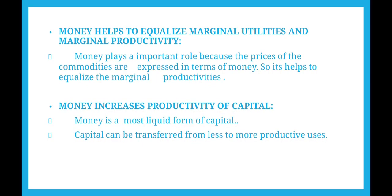The next function is money helps to equalize marginal utility and marginal productivity. The price of all commodities are expressed in money, and money helps both the consumer and the producer to maximize their satisfaction.